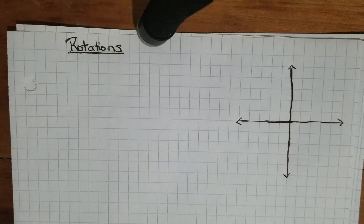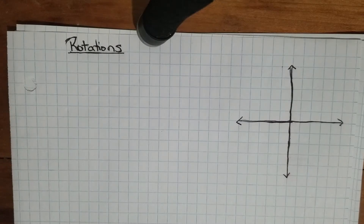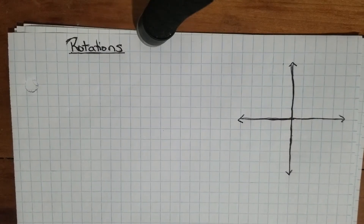Welcome, Grade 8, to our next video — our final video on different types of transformations called rotations. Rotations is our third and final way we're going to talk about how we can move around a shape on a grid. Our first was reflection, our second was transformation, and our third is rotations. Rotations is all about taking an object or an image and spinning it or rotating it into a new spot.